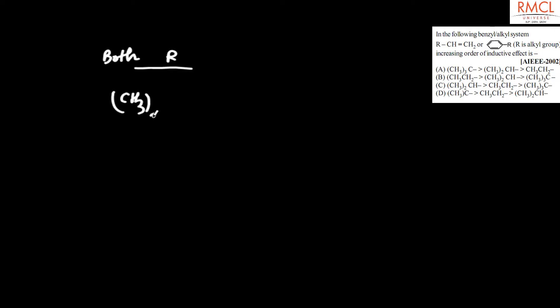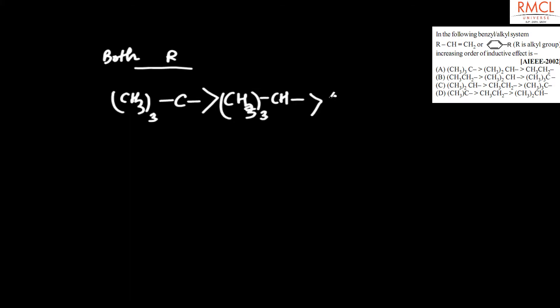The correct increasing order of positive inductive effect is: (CH₃)₃C > (CH₃CH₂)₃CH > CH₃CH₂. The inductive effect increases due to the increasing number of alkyl groups. So the correct option is option A.